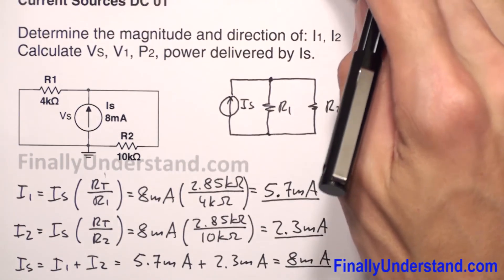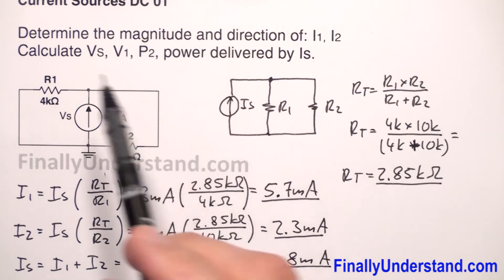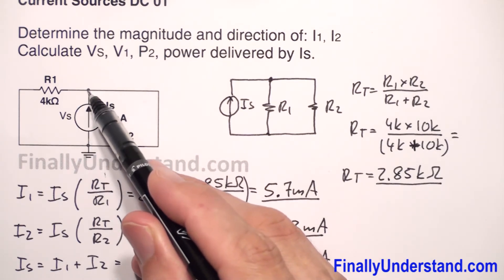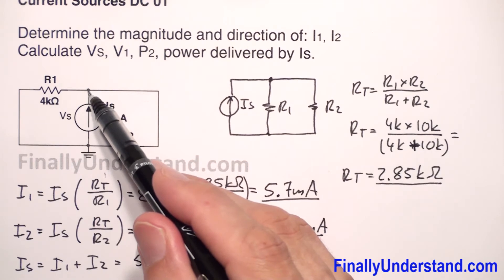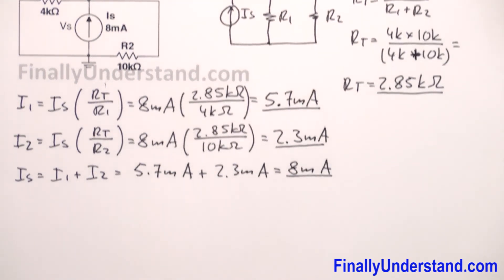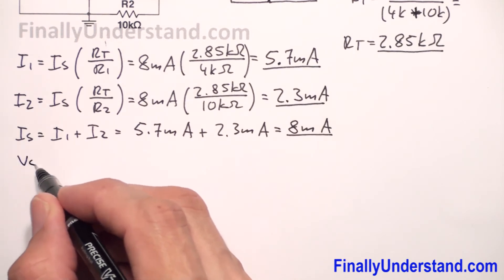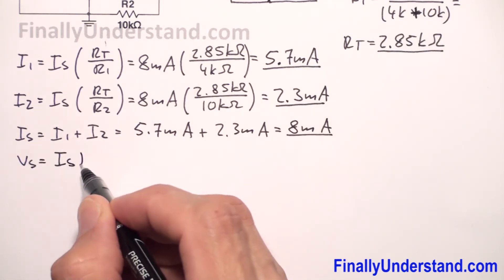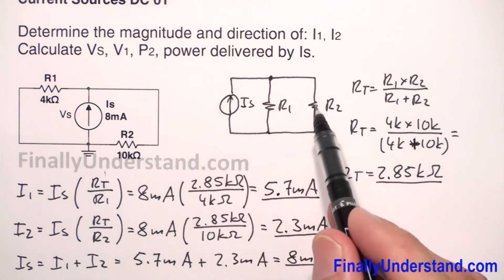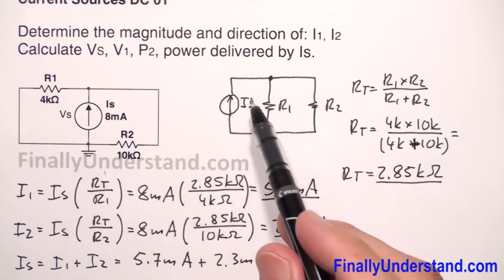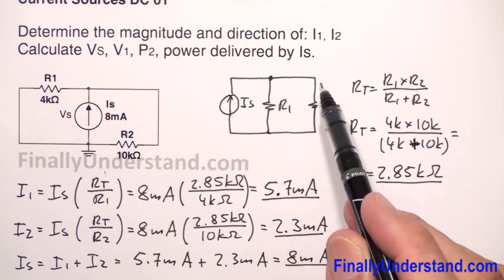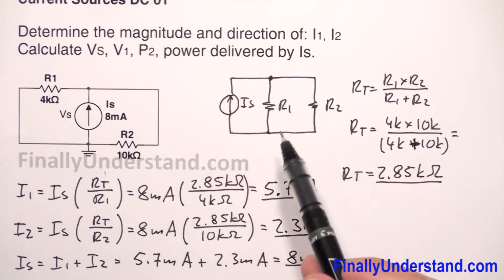So we have found I1 and I2. Next, we are supposed to calculate voltage VS — the voltage between these two points, which is the voltage across my current source. So VS is equal to IS times R_total. Because this current times the total resistance of the circuit gives me the voltage across the current source. This is also the voltage across resistor R1 and resistor R2, because these two resistors are in parallel. In a parallel circuit the voltages are the same.